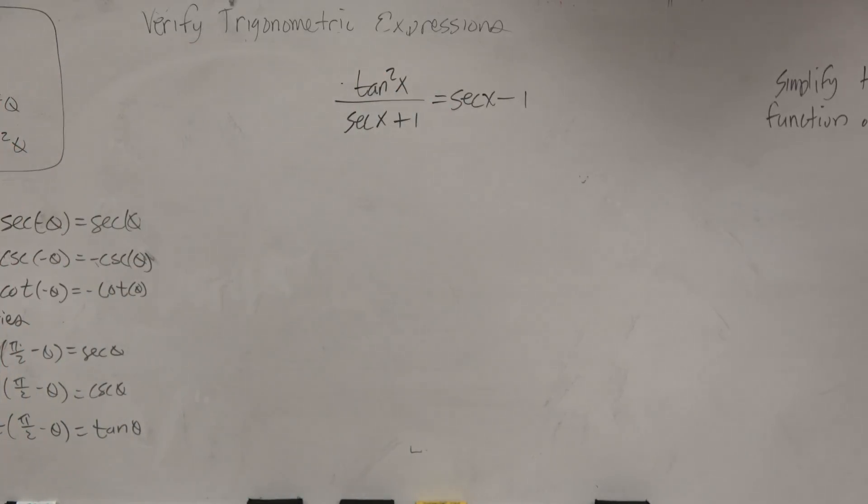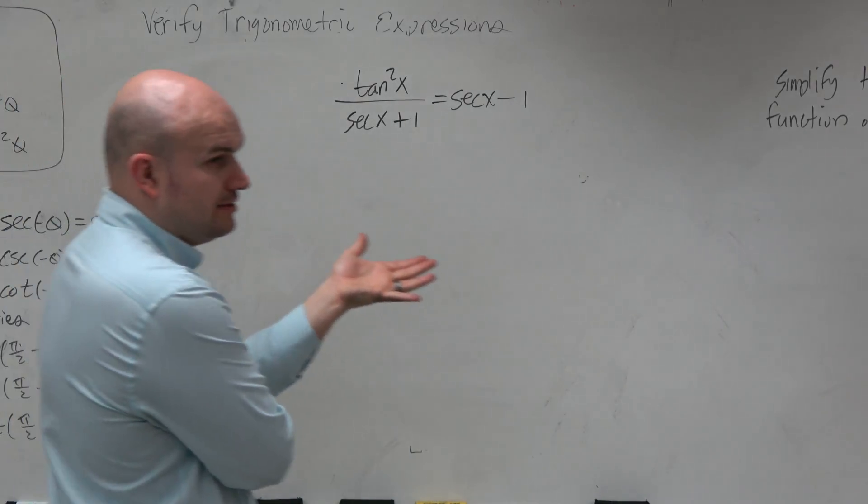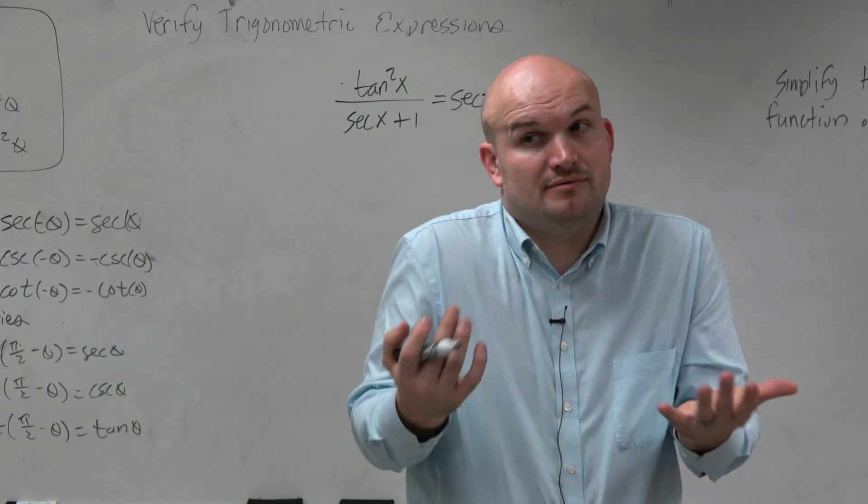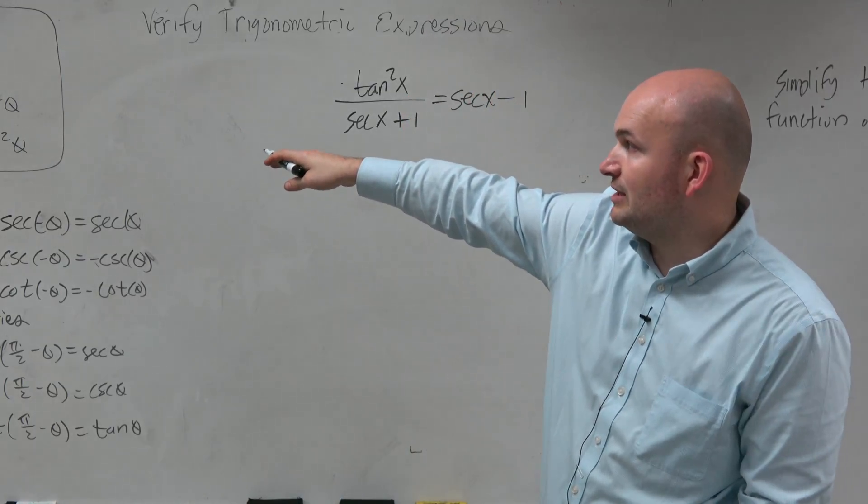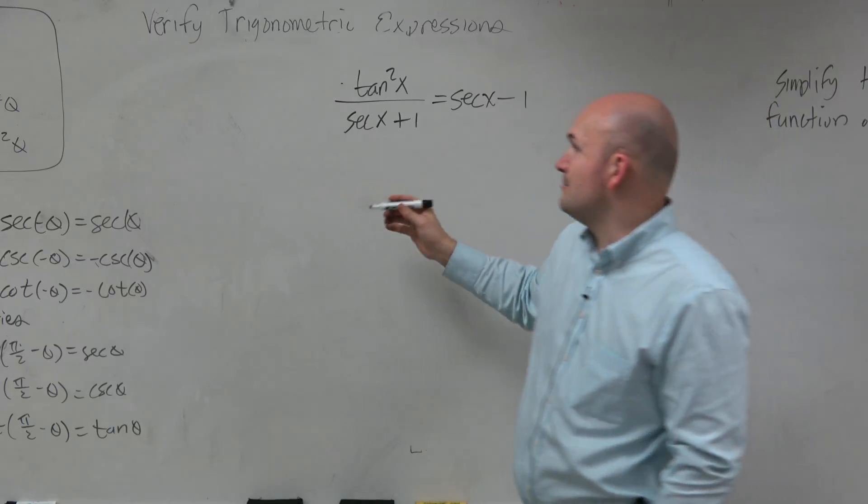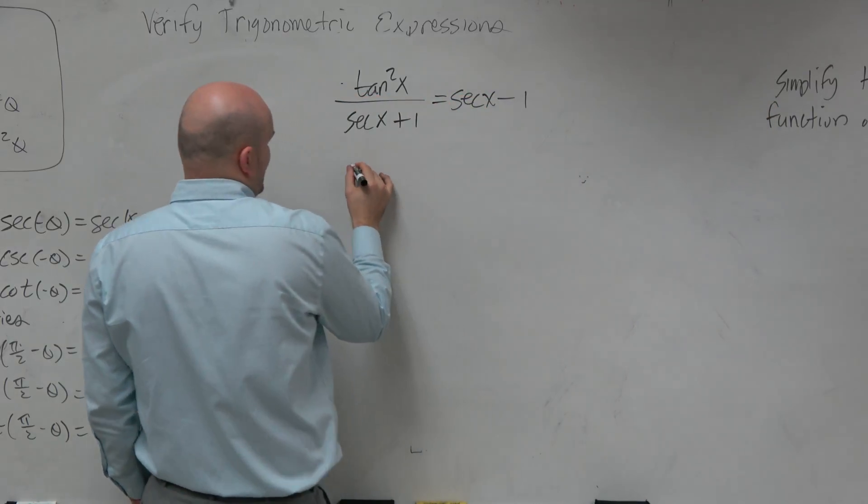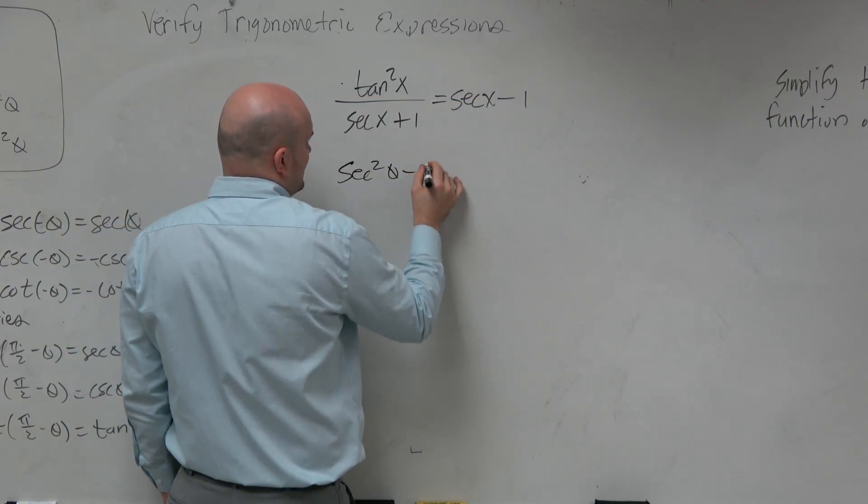So when we look at this, one thing I notice though is I have a tangent squared. And I want to think to myself, well, the one thing I just remember with my tangent squareds is I can apply my Pythagorean identities. And tangent squared equals secant squared of theta minus 1. So let's rewrite this as secant squared of theta minus 1.